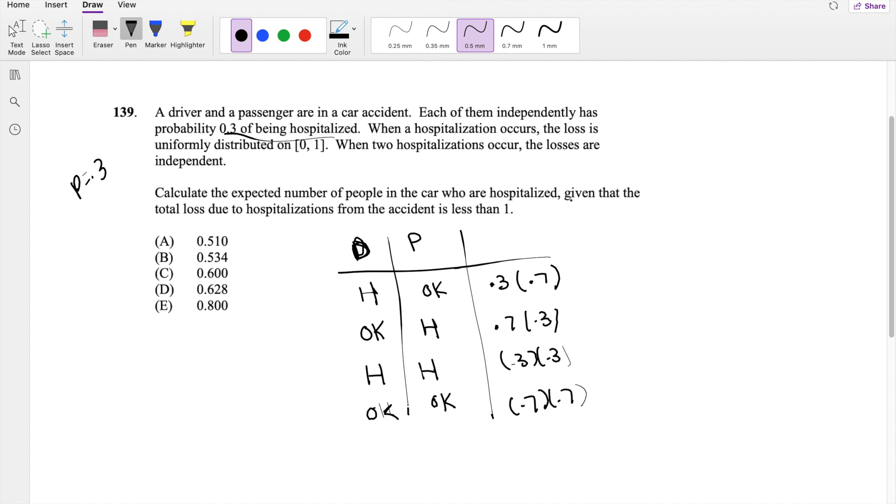it says given that the total loss due to hospitalization is less than 1. We know the loss is uniformly distributed on 0 to 1. So the probability that only one person is hospitalized is straightforward. But then, however, if there is, like let's say we're in scenario 3,